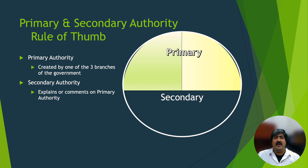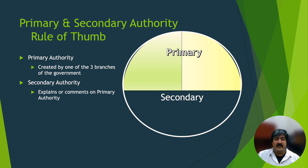What is primary and secondary authority? The rule of thumb is that primary authority is created by one of the branches of government — the legislative branch, executive branch, or the judicial branch — whereas secondary authority explains or provides commentary on primary authority. Let's dig a little deeper.